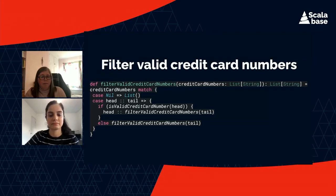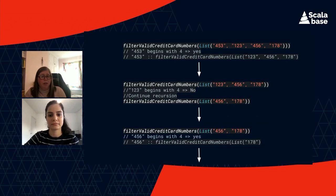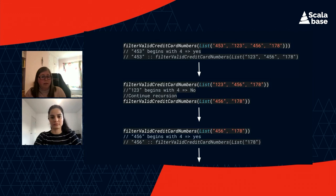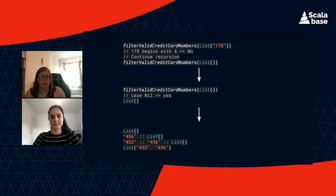Using the first three digits of each number: we begin with our list of four numbers. The head is 453 — it begins with 4, so we filter it in. Next, the head is 123 — it doesn't begin with 4, so we continue the recursion. The next head is 456 — it begins with 4 and we filter that in. The last number doesn't begin with 4, so we continue the recursion and the tail is empty. We evaluate the empty list as nil and end the recursion, finally returning the filtered list: 453, 456.